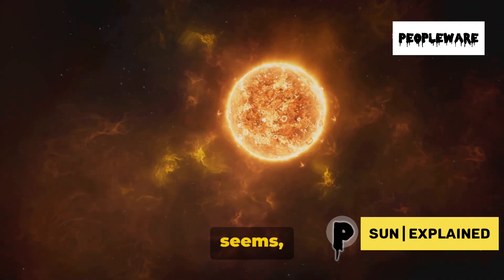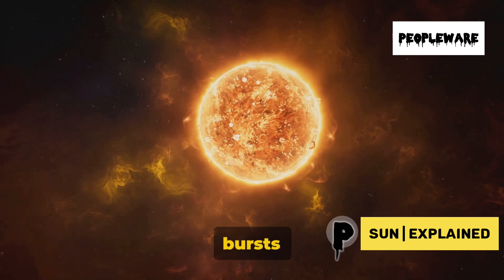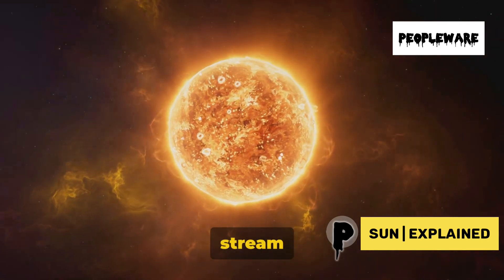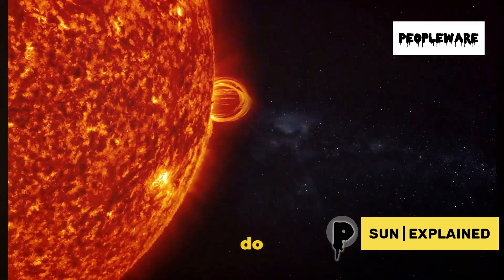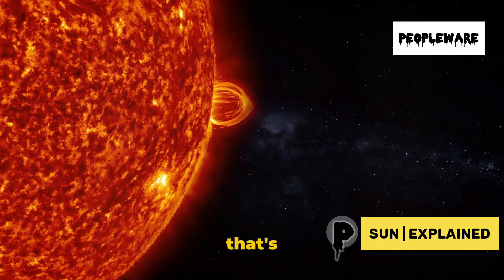Our Sun, it seems, has a temper, releasing its energy in bursts of solar flares and the constant stream of the solar wind. How do we learn so much about a star that's 93 million miles away?